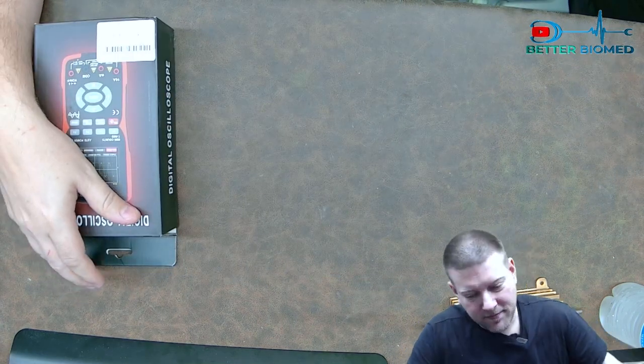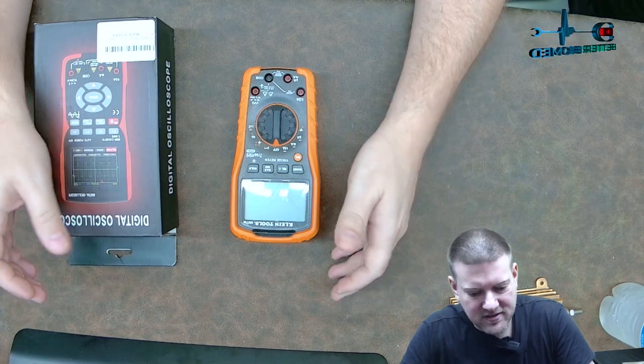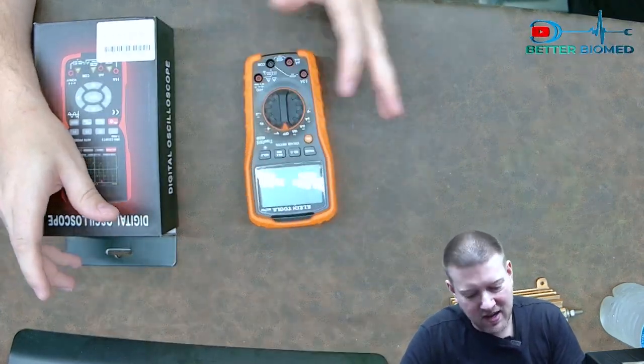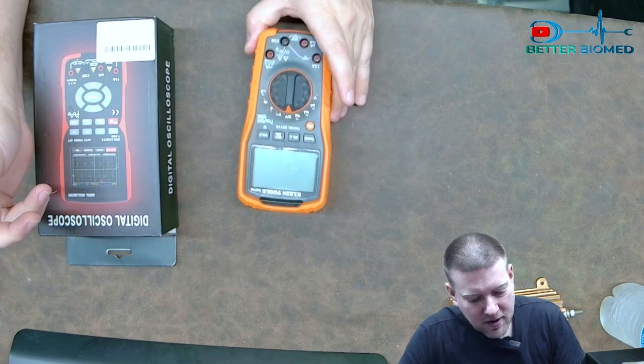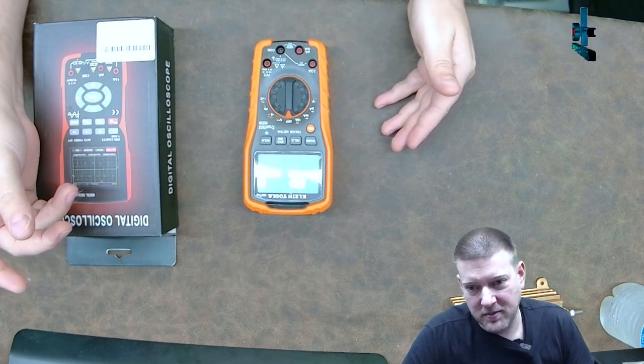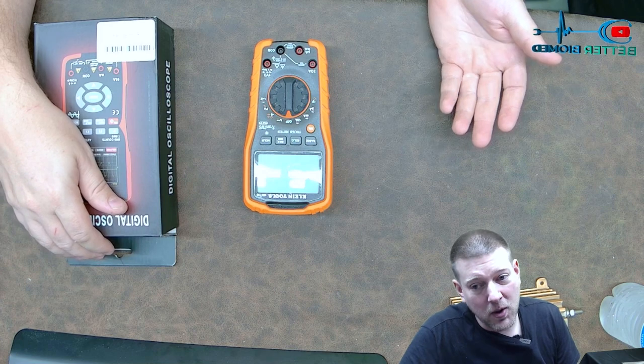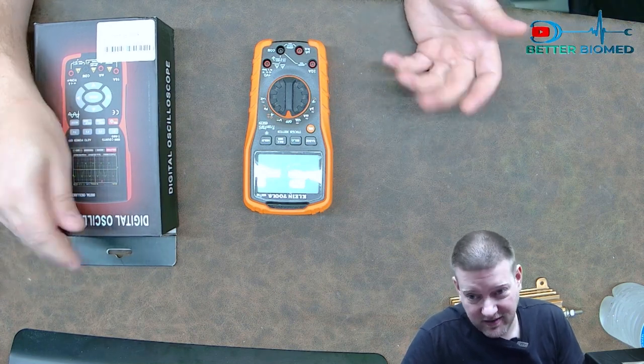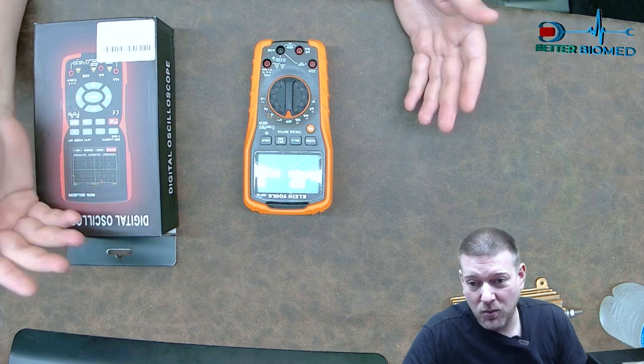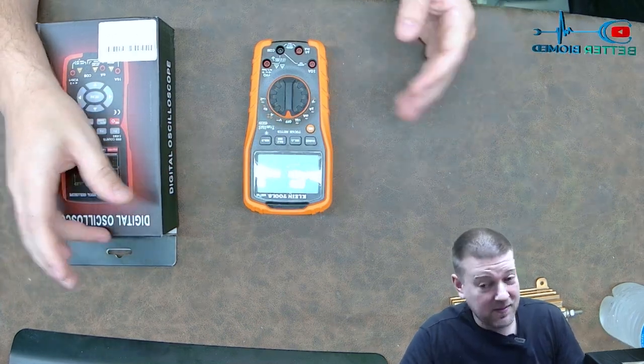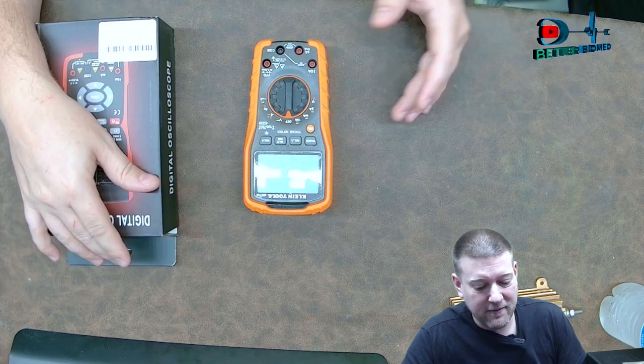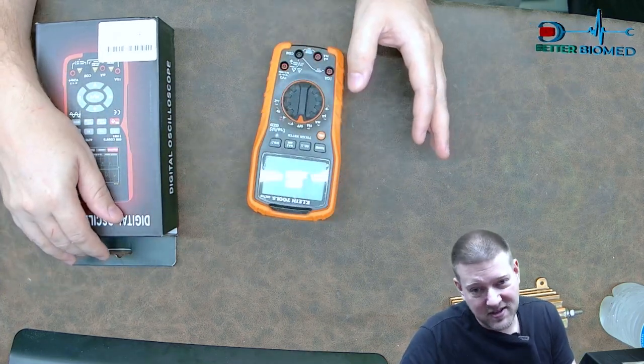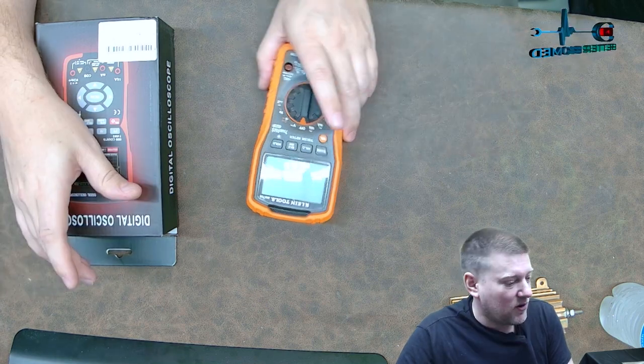So first, traditional multimeter size. It's the Klein, this is the MM700. Excellent meter, love this guy. It's been working like a treat, but it's just a multimeter. That's all it can do. And when you're testing motors and maybe some other things, I really wish that I could test some things and see what waveforms on the other side. Maybe it's not exactly DC, maybe it's not a clean AC waveform. This guy, it's good, gets me through 95% of the jobs, but it just can't always cut it.